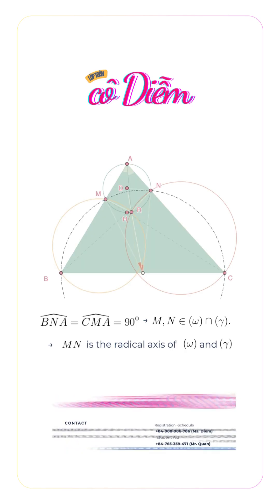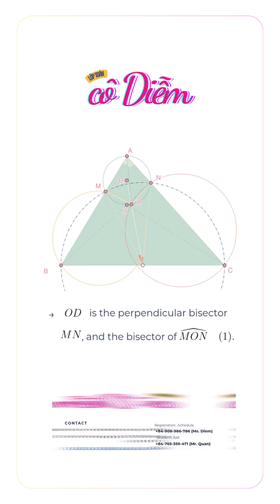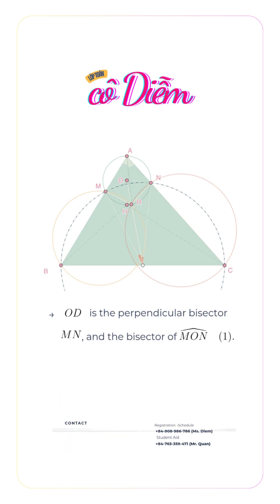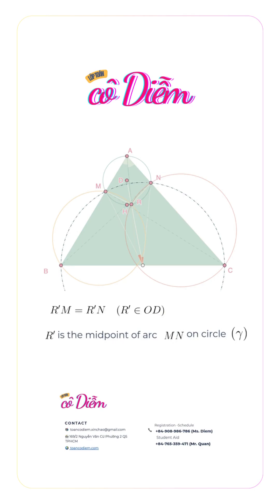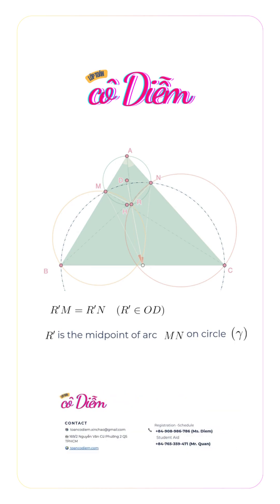Therefore MN is the radical axis of circles Ω and Γ. It follows that OD is the perpendicular bisector of MN, and also the bisector of angle MON. This is point 1. Hence R'M equals R'N, so R' is the midpoint of arc MN on circle Γ. Hence AR' is the bisector of angle MAN. This is point 2.